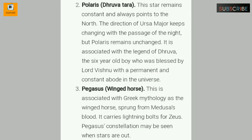Number two: Polaris — Dhruvatara. This star remains constant and always points to the north. The direction of Ursa Major keeps changing with the passage of the night, but Polaris remains unchanged. It is associated with the legend of Dhruva, the six-year-old boy who was blessed by Lord Vishnu with a permanent and constant place in the universe.